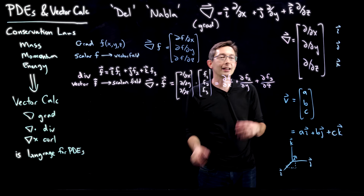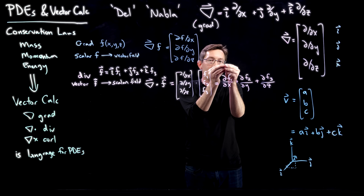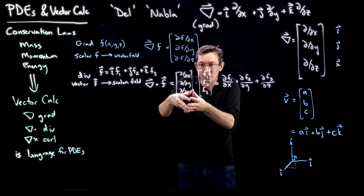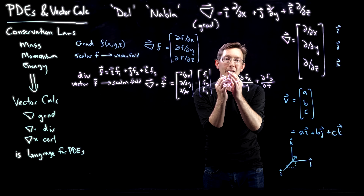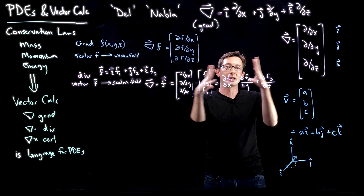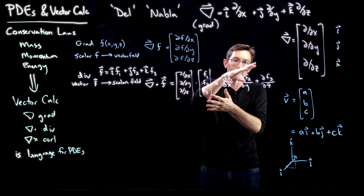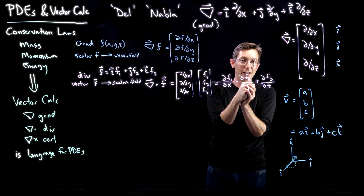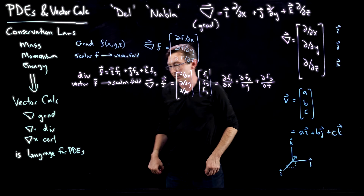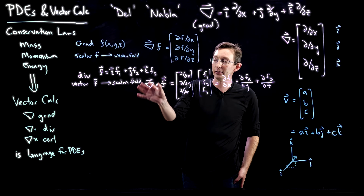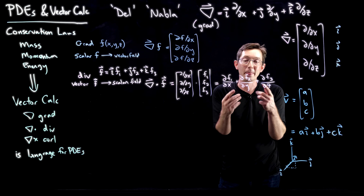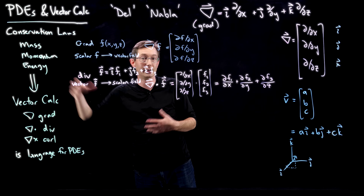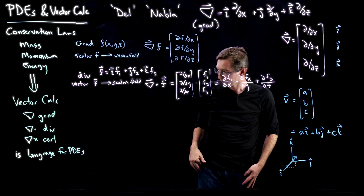Specifically, the divergence computes how much my vector field is locally expanding outward or contracting inward. The divergence is greater than zero if my vector field is sourcing out — blowing stuff away from a point — and it's negative if it's pulling stuff in. A divergence-free vector field, where this equals zero, is called incompressible, and it literally means incompressible in a fluid dynamics sense.